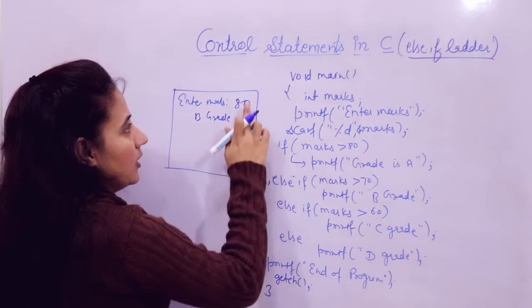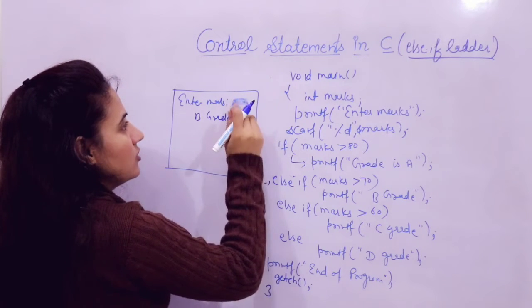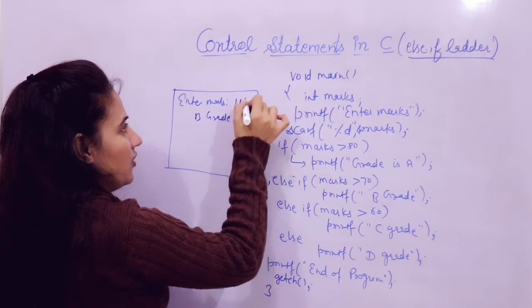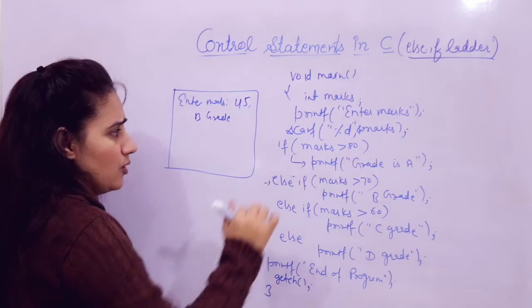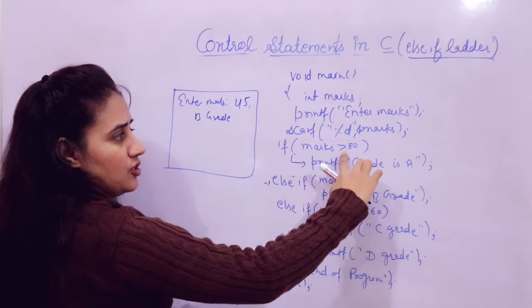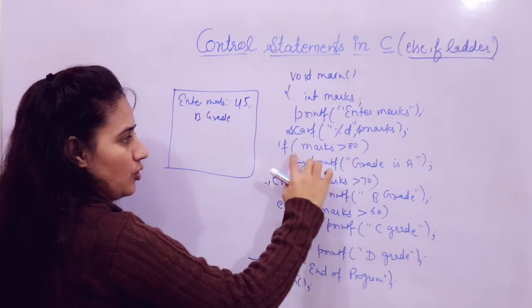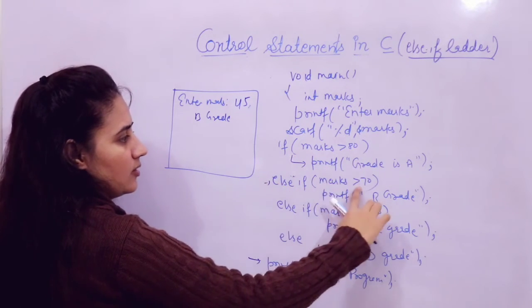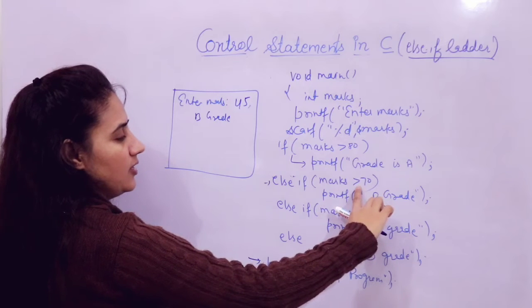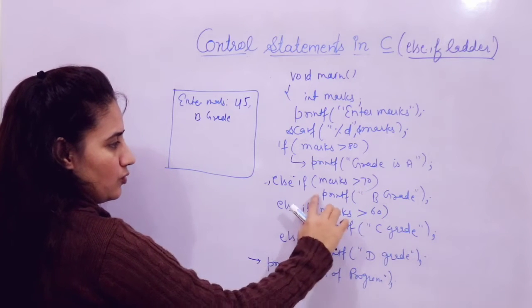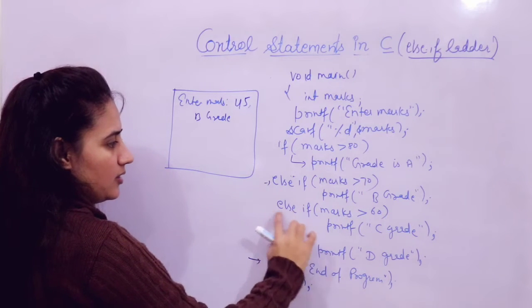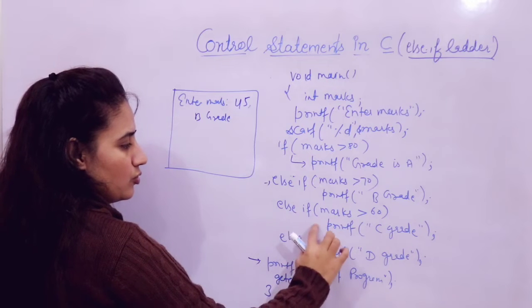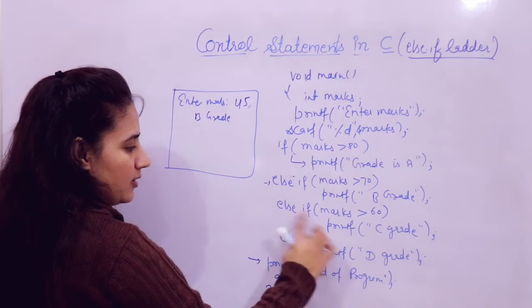Now suppose marks entered are 45. First condition — marks greater than 80 — is false, so it will not enter there. Second condition — marks greater than 70 — is false, so it will not enter there. Third condition — marks greater than 60 — is also false, so it will not enter there.